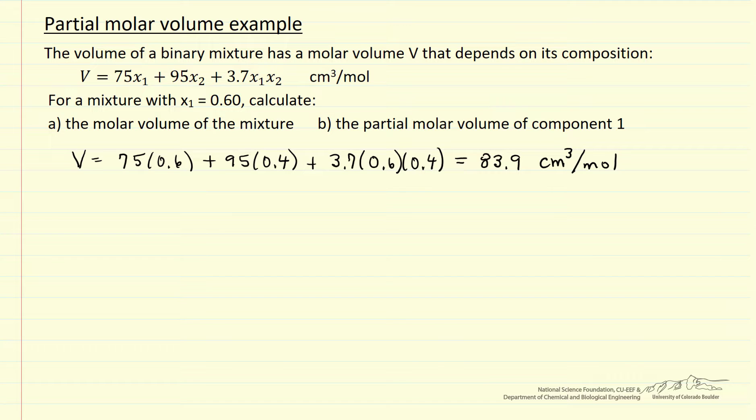Next, we want to get the partial molar volume, and because this is a binary mixture, we can use the equation where partial molar volume has the bar over the molar volume for component one. It's equal to the molar volume plus the mole fraction of the second component, and a derivative, and this is not a partial derivative, but this is a total derivative.